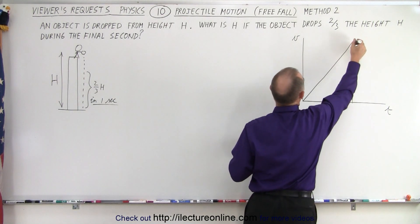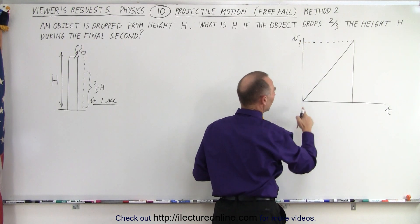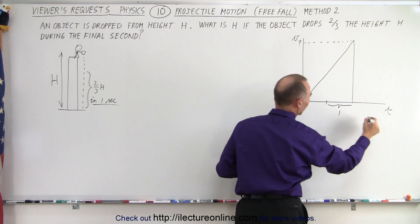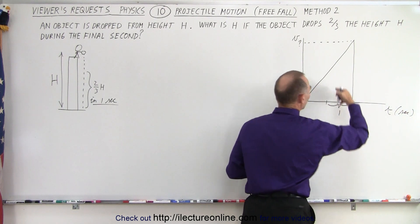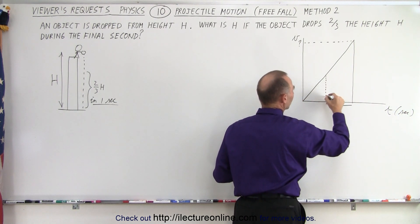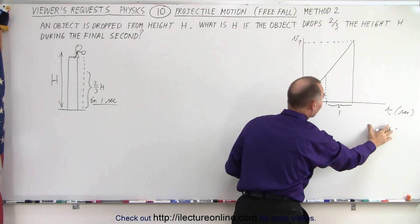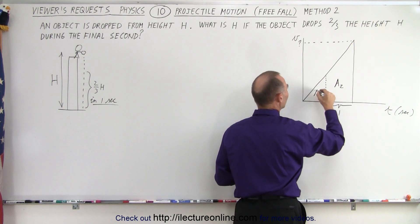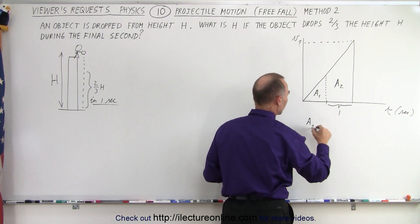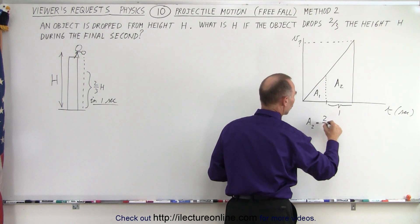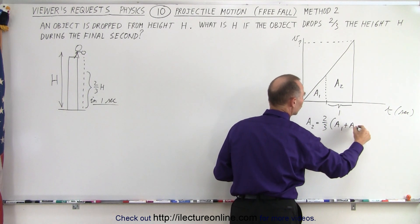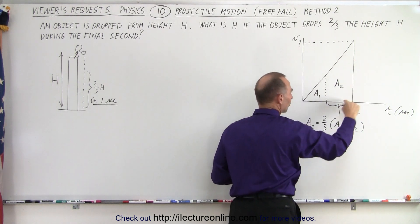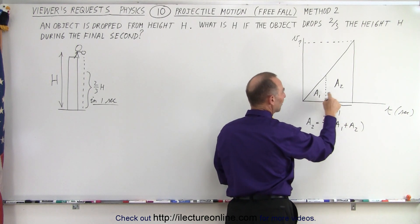So that will be the graph that we have. We don't know what the velocity will be when it finally reaches the ground, and we don't need to know that. We don't know the total time, but we do know that in the last one second of its path, the last one second, time is in seconds, we drop two-thirds of the total distance. Remember that the area underneath a velocity versus time graph represents the distance traveled. So let's call this distance a2, and let's call this distance a1. So we know that a2 must be equal to two-thirds the total distance, which is the sum of a1 plus a2.